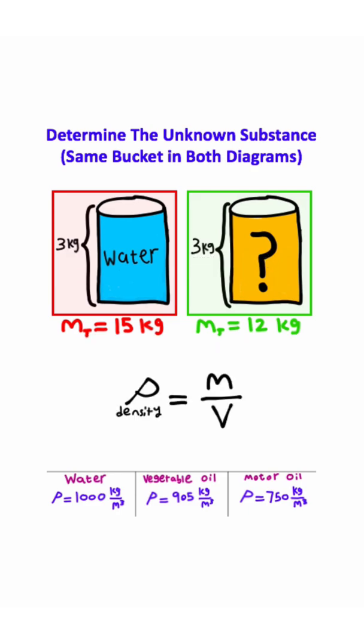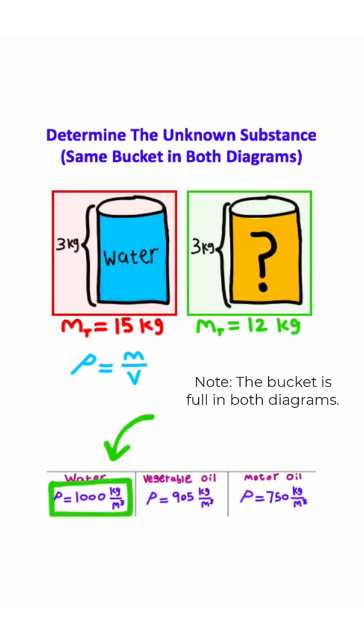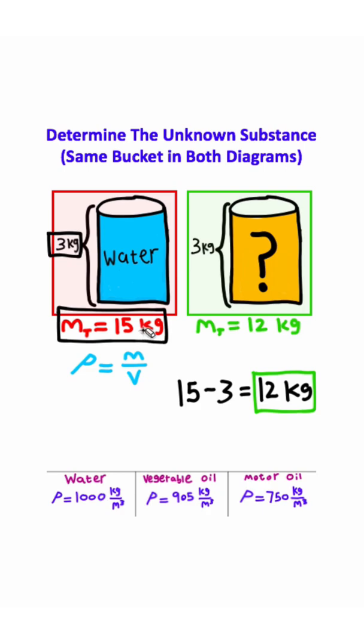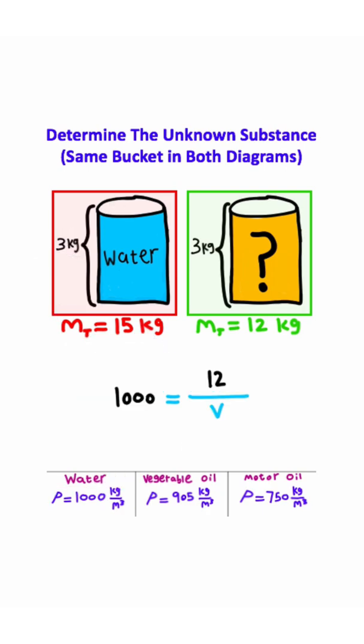Density is equal to mass over volume. I can use this equation on the bucket of water over here, because I have the density of water, and I can determine the mass by taking this 15 kilograms and subtracting off this 3 kilograms. That'll give me 12 kilograms, which I can plug in for my mass, giving me this equation right here.